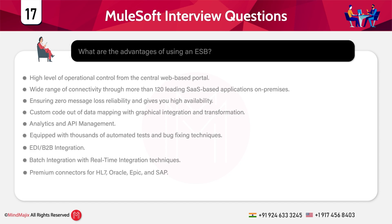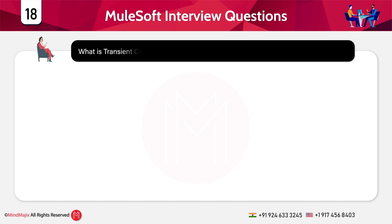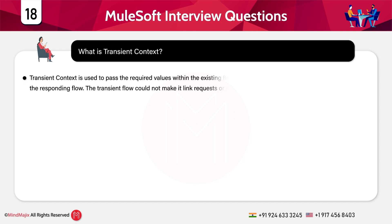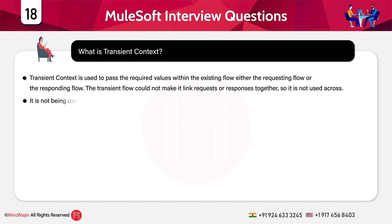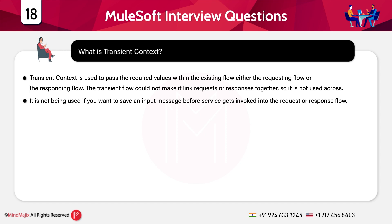What is transient context? Transient context is used to pass required values within an existing flow — either the requesting flow or the responding flow. The transient flow cannot link requests and responses together, so it cannot be used to save an input message before a service gets invoked in the request or response flow. Transient acts as temporary storage of messages; after service invocation, the next primitive creates another message by combining the invoked response and the original message stored in the transient context.